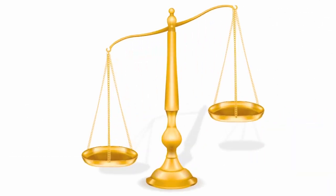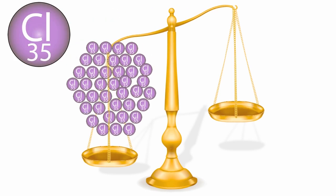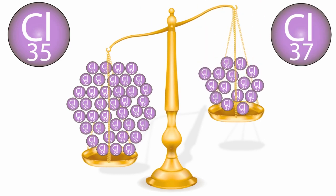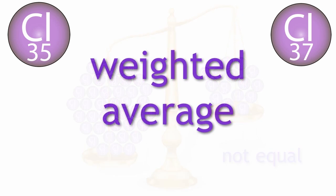We need to remember that we are talking about number of atoms. There are a certain number of chlorine atoms with a mass of 35, and a certain number with a mass of 37. However, within a sample, the levels of each isotope are not equal. So we take this into account when calculating the relative atomic mass, so that we are calculating a weighted average.